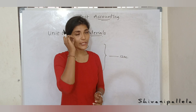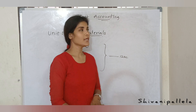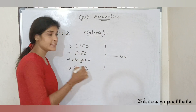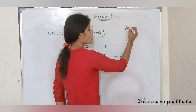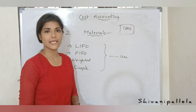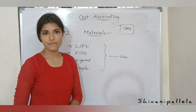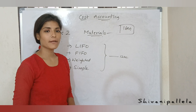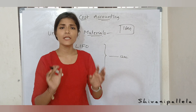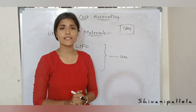Let me know how many of you are interested in explanations for other chapters also. In cost accounting, unit number 2 is named 'Materials' and you can score 16 marks — all 16 marks easily. This is the easiest unit in the overall cost accounting subject. It is a problematic subject but in the easiest way to learn; you just need to understand the concept.